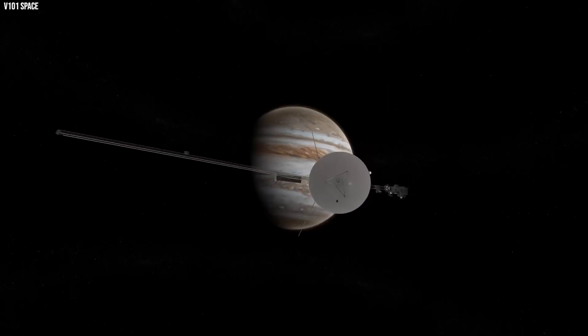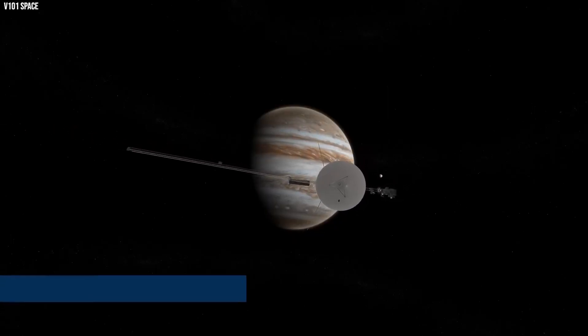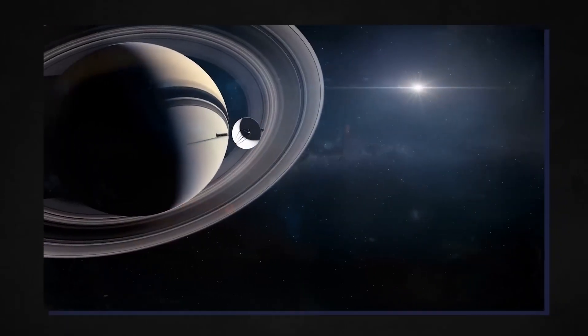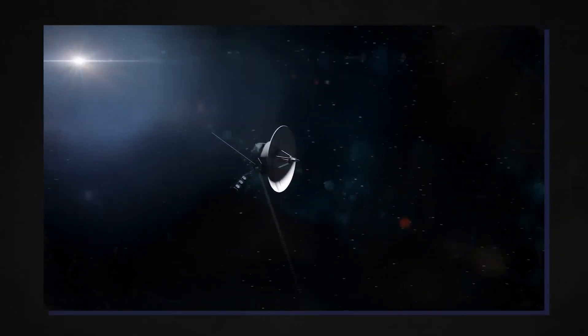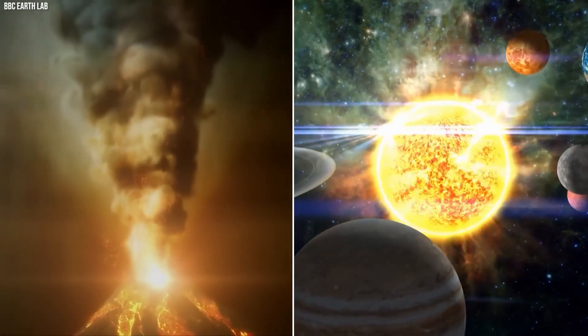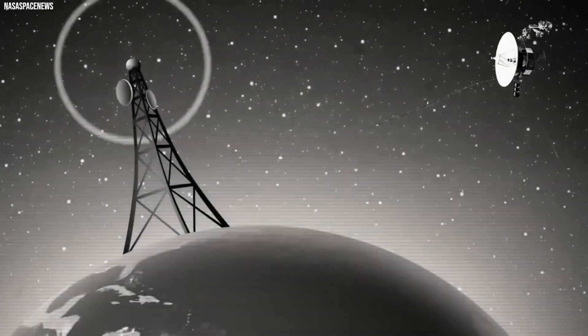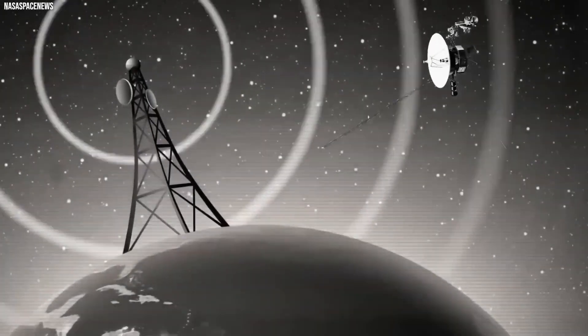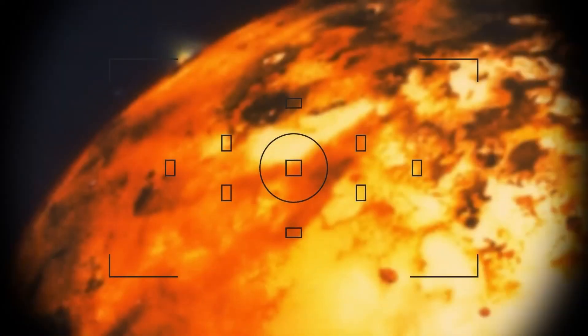Voyager 2 blazed a trail through the cosmos, becoming the first spacecraft to venture close to Uranus in 1986 and then sail past Neptune just three years later. It stands alone as the sole spacecraft to have embarked on such a journey so far, surprising physicists with astonishing discoveries in uncharted territory over 14 billion miles from home. These pioneering interstellar probes, no larger than a vintage Volkswagen Beetle, have defied expectations and continue to push the boundaries of our understanding.